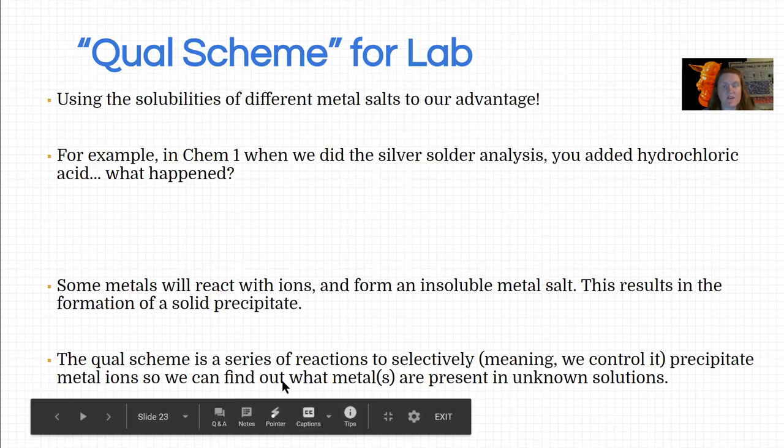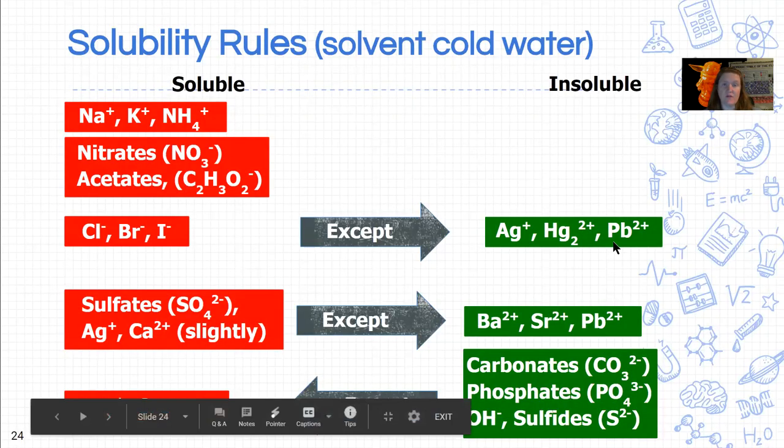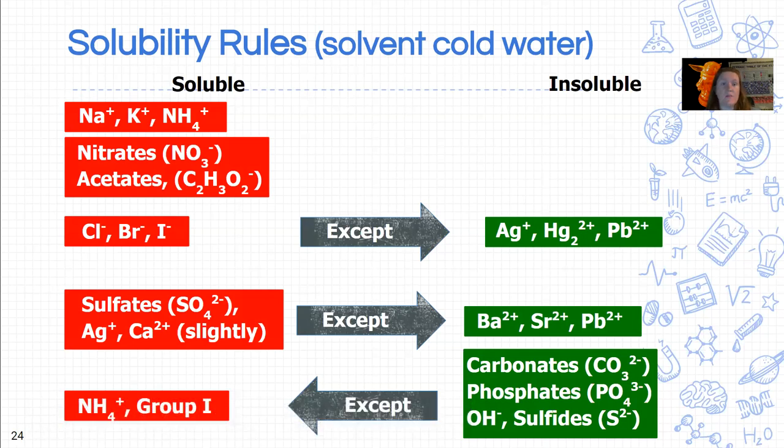The whole point of the qual scheme in lab is to control when things precipitate and how they precipitate, and that is by essentially controlling the intermolecular forces. This is a review account from Chem 141.